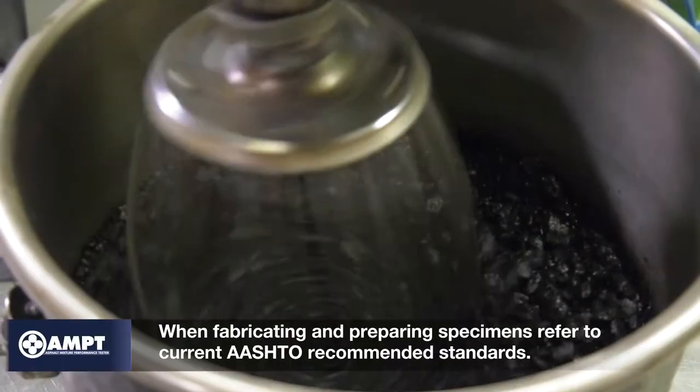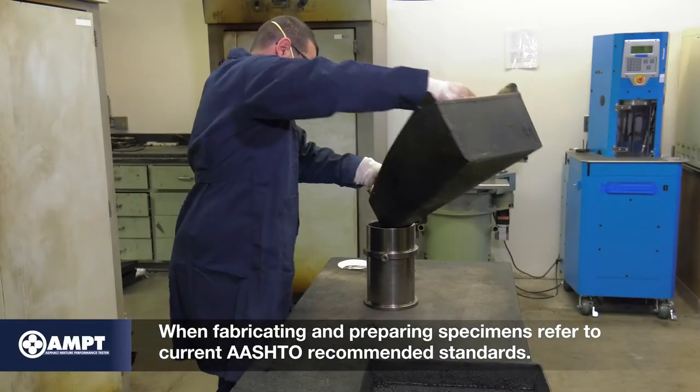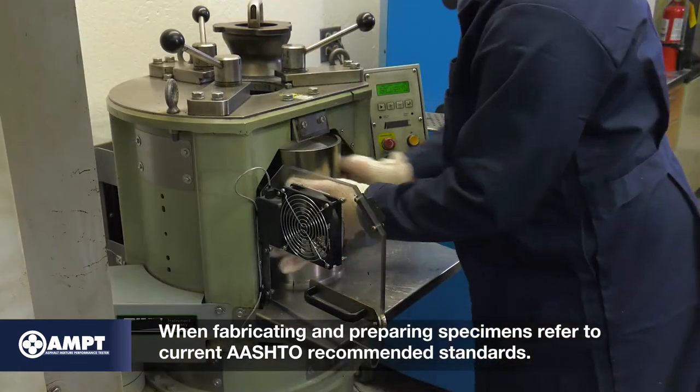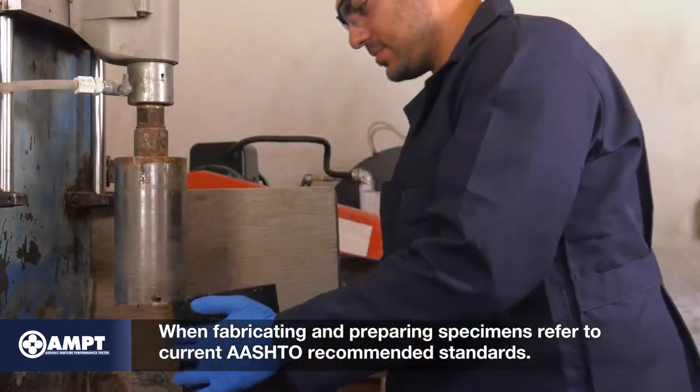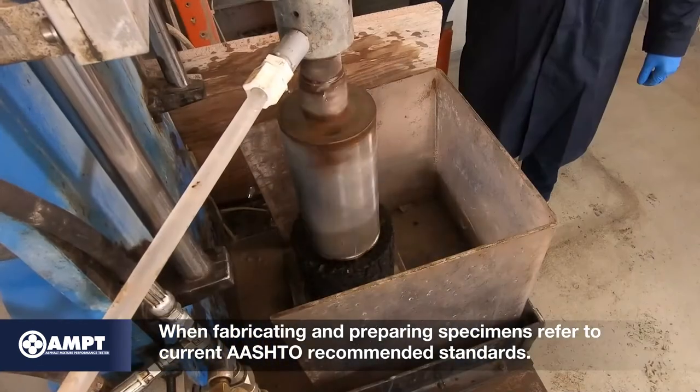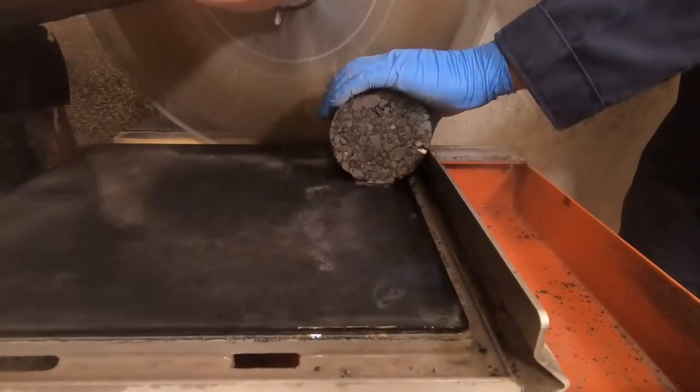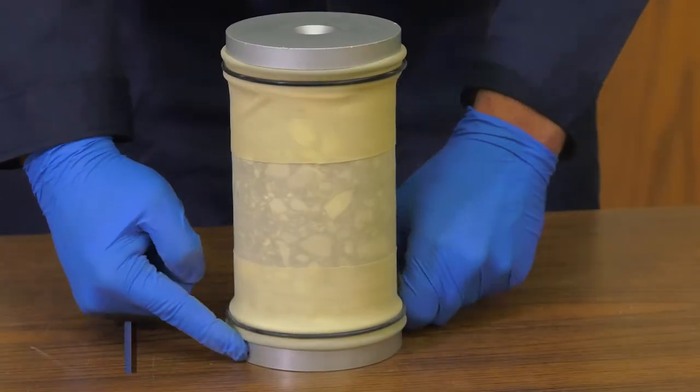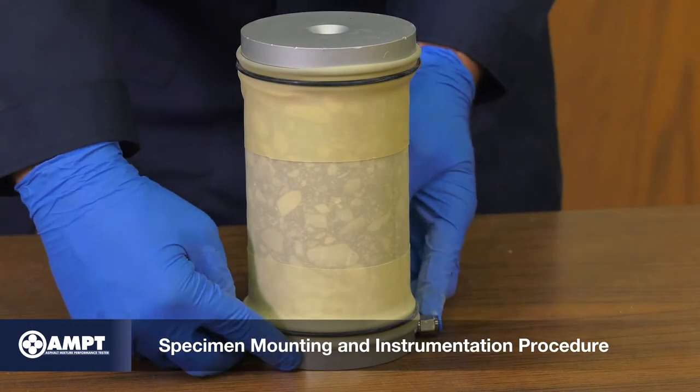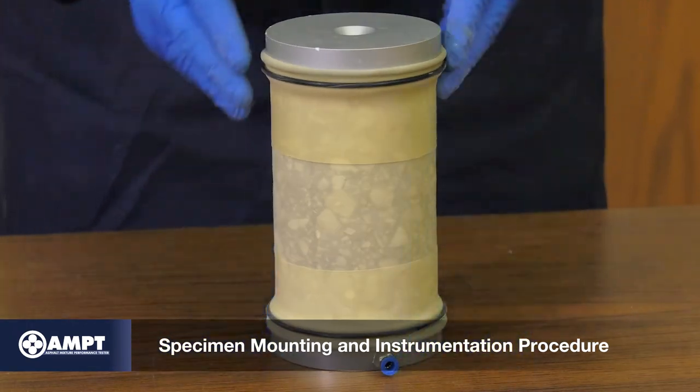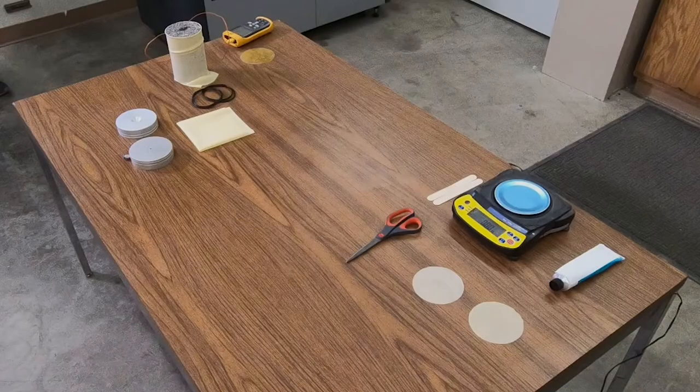Before starting this test, fabricate four test specimens as recommended by AASHTO R83. Refer to video one on small and large-scale specimen fabrication in this series for more information. Before beginning the SSR test, prepare the specimen assembly as follows.